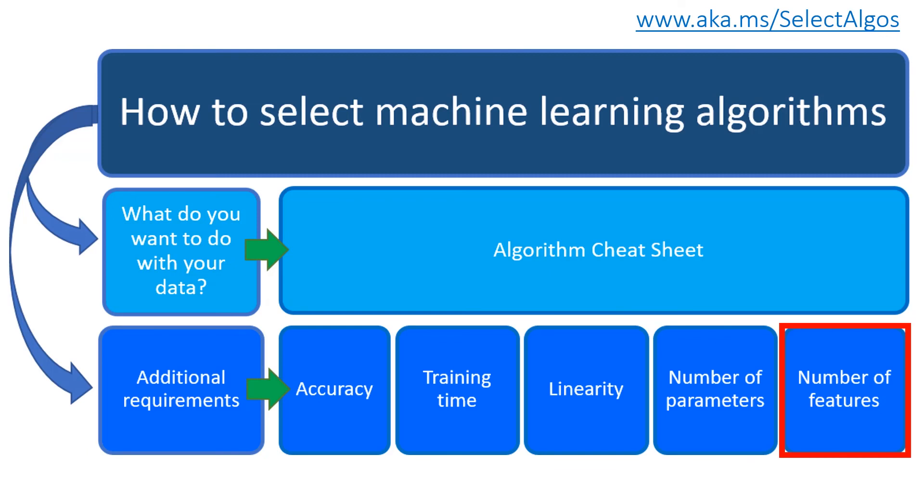This is, for example, the case with genetics or textual data. A larger number of features can slow down some learning algorithms and making the training time very, very long.